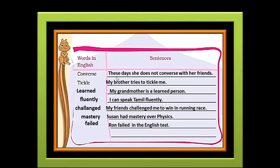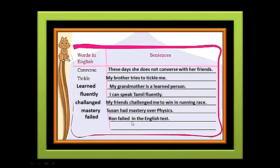The first word is converse, and the sentence is: these days she does not converse with her friends. The second word is tickle, and the sentence is: my brother tries to tickle me. The third word is learned, and the sentence is: my grandmother is a learned person. The fourth word is fluently, and the sentence is: I can speak Tamil fluently. The next word is challenged, and the sentence is: my friends challenged me to win in a running race. The next word is mastery, and the sentence is: Susan had mastery over physics. The last word is failed, and the sentence is: Ron failed in the English test.